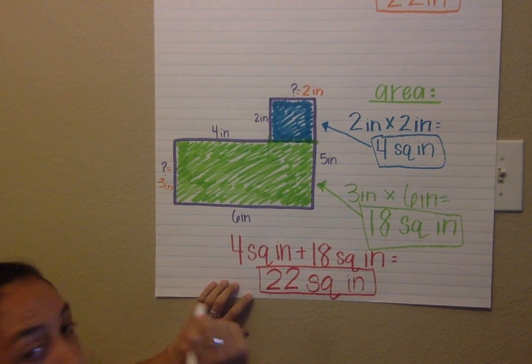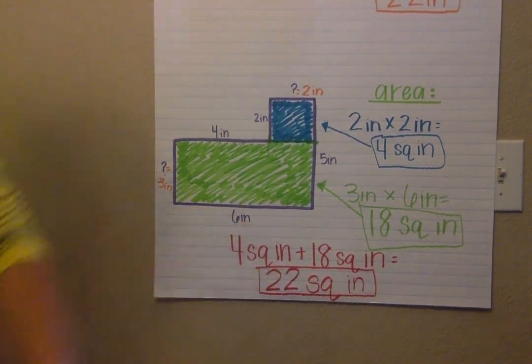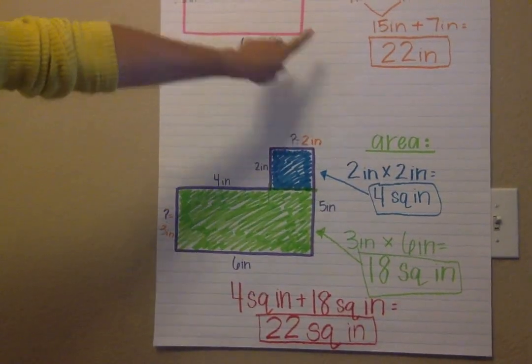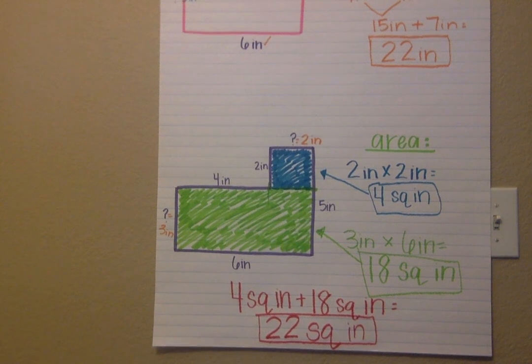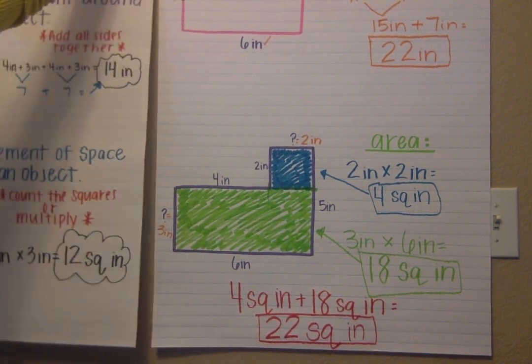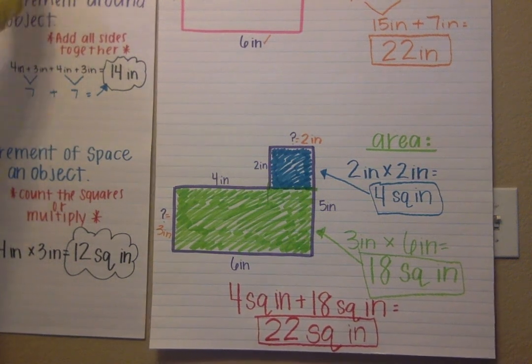So now you see that both my area and my perimeter for this irregular shape are the same. But that does not always happen. This one we just happened to get lucky on.